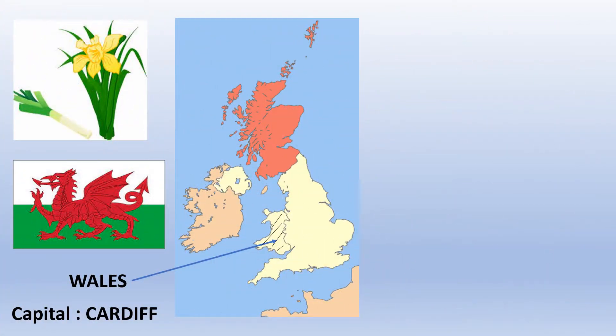Then here you've got a striped bit in yellow which is Wales, whose capital is Cardiff. On the flag there's a dragon, because of the legend of Saint George killing the dragon. Wales has two emblems: the leek and the daffodil, a beautiful yellow flower.